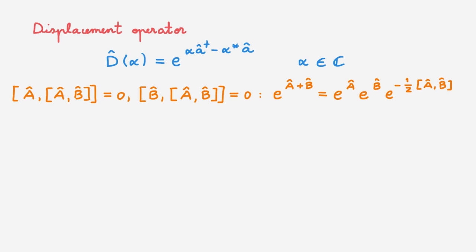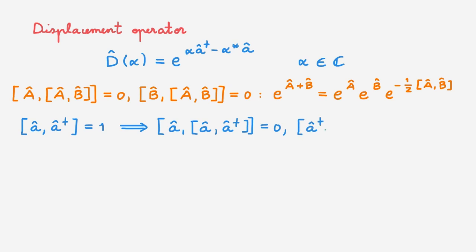In our case, the ladder operators obey this commutation relation. And as their commutator is a scalar, we immediately have that A commutes with the commutator of A and A†, and A† also commutes with the same commutator.